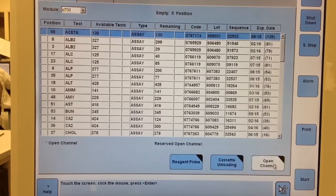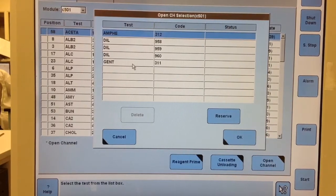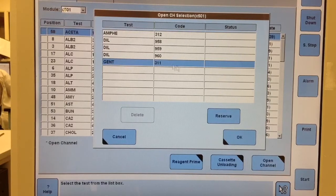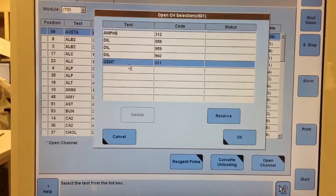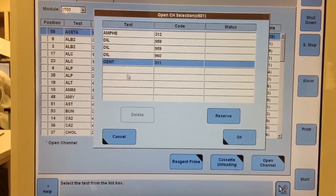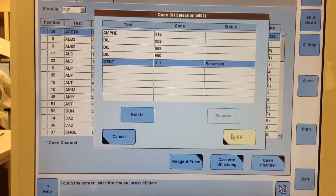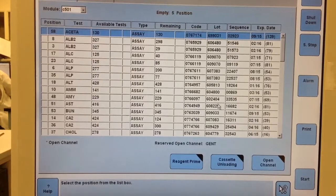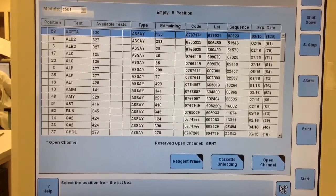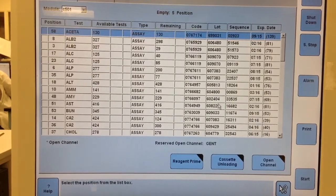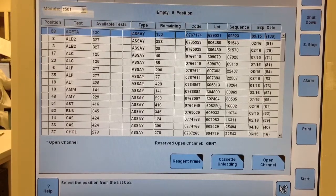After you've gotten that far, the next thing that you have to do is you click on open channel there at the bottom right, and these are the open channels you see that we have loaded. And I'm going to be loading gentamicin, so you click on gentamicin. And then after that, you want to select reserve, and then OK. And what that does is it sets up the next cassette to be loaded onto the Cobas to be gentamicin. And there you go. Thanks for watching my video.